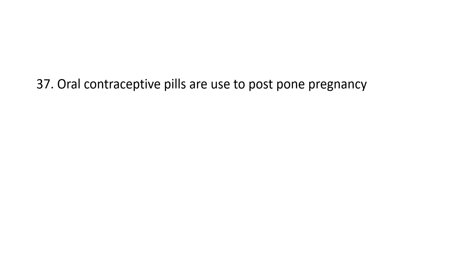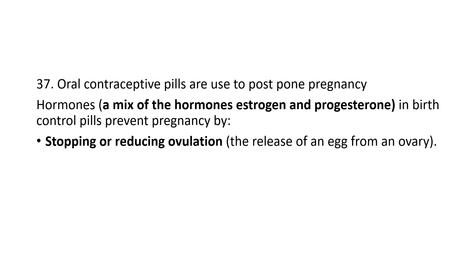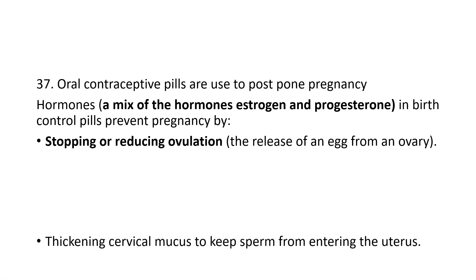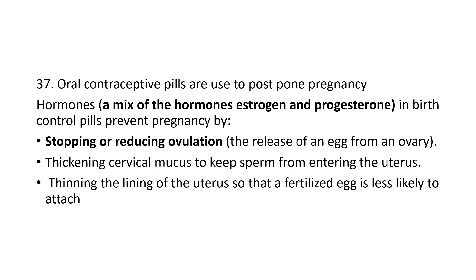Oral contraceptives are used to postpone pregnancy. They are a mixture of high estrogen and progesterone; these controlled pills prevent pregnancy. The main composition of oral contraceptive pills are hormones — estrogen and progesterone. They prevent pregnancy by three methods: first, stopping or reducing ovulation so there is no ovum production; second, thickening the cervical mucus to keep sperm from entering the uterus; and third, thinning the lining of the uterus so that a fertilized egg cannot implant or grow. By these three methods, oral contraceptive pills postpone pregnancy.